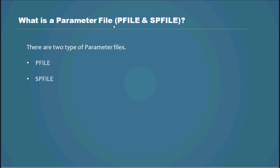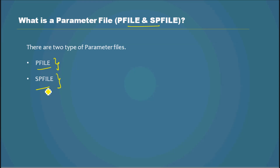There are two types of parameter files: one is pfile and the next one is spfile. In the next video we will talk about what pfile is, the characteristics of pfile, and the characteristics of spfile.